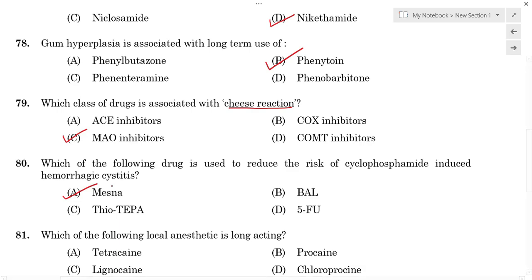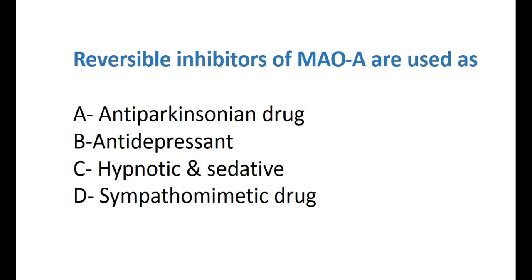Bonus question: Reversible inhibitors of MAO-A, shortly called RIMA (R-I-M-A), are used as which type of drug? Options: A) anti-parkinsonian drug, B) antidepressant drug, C) hypnotic and sedative, D) sympathomimetic drug. Please comment your answer below.